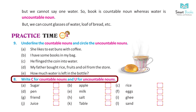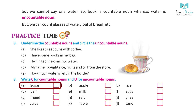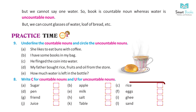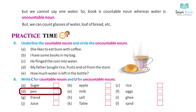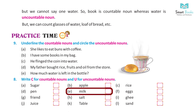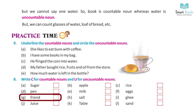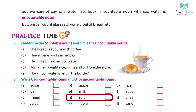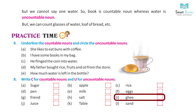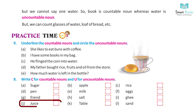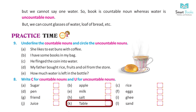Question 10: Write C for countable nouns and U for uncountable nouns. A) Sugar — U. B) Apple — C. C) Rice — U. D) Pen — C. E) Milk — U. F) Eggs — C. G) Friend — C. H) Salt — U. I) Ghee — U. J) Juice — U. K) Table — C.